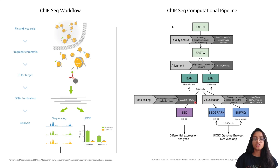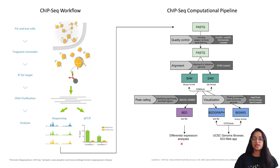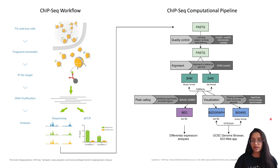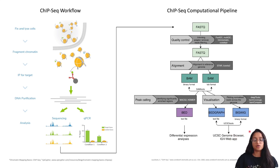Tools like MACS2 and HOMER are used for peak calling. The identified peaks can be used for downstream analysis such as differential binding analysis — comparing ChIP-seq profiles between different conditions or cell types to identify differentially enriched regions. One can also perform motif analysis to search for over-represented DNA motifs within enriched regions, identifying potential transcription factor binding sites, or annotate peaks to identify genomic features. Tools are also available to normalize reads and visualize enriched regions as tracks or heat maps.